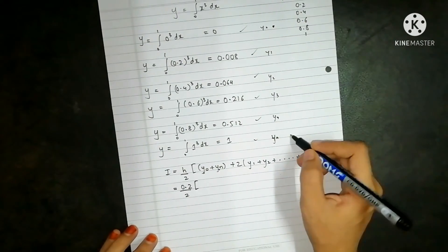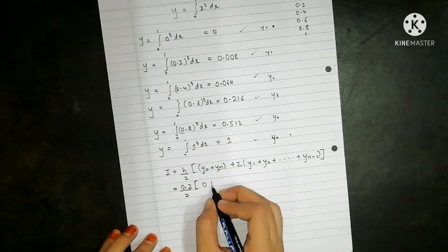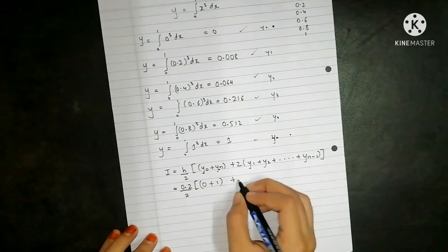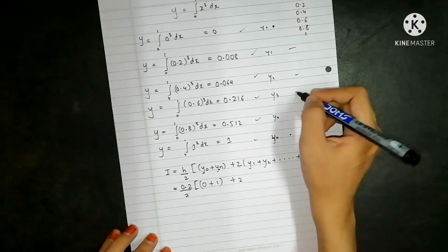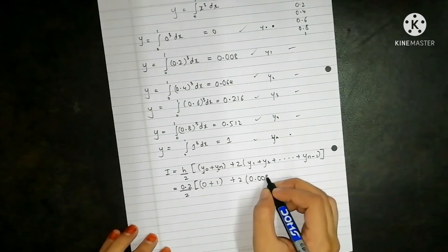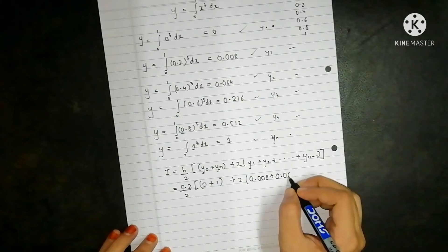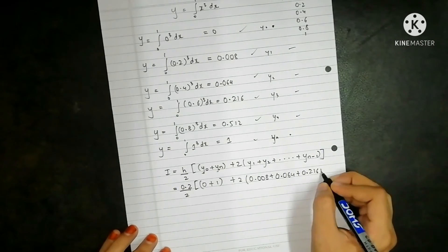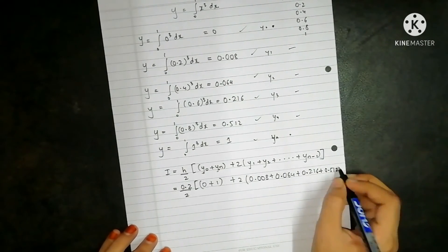So 0 plus 1, then 1, 2, 3 and 4 readings. So 2 times 0.008 plus 0.064 plus 0.216 plus 0.512.